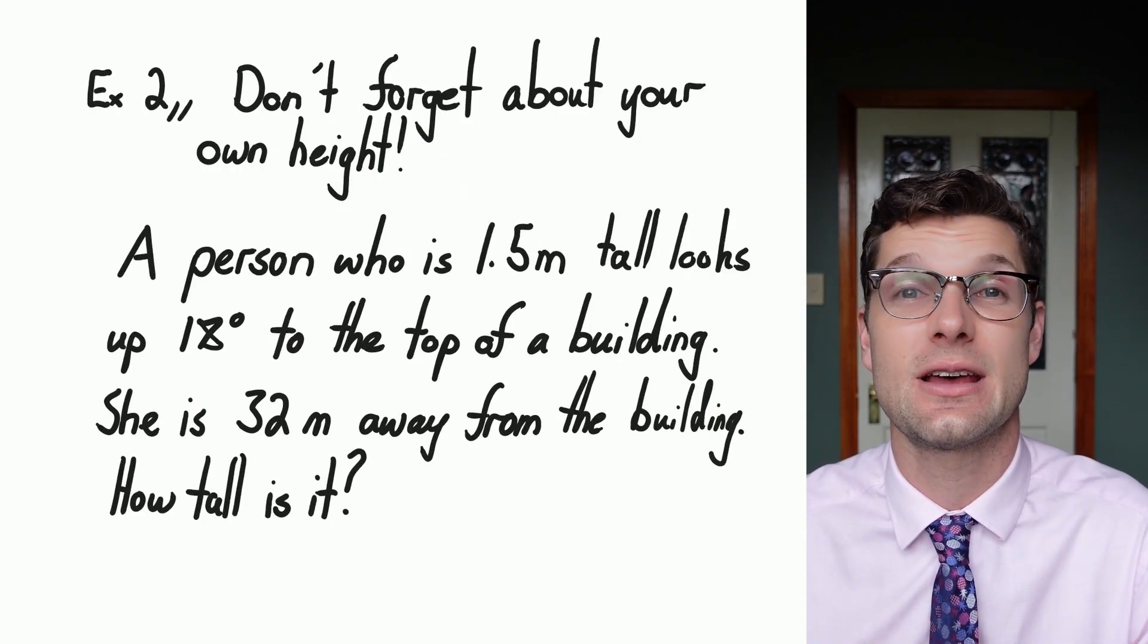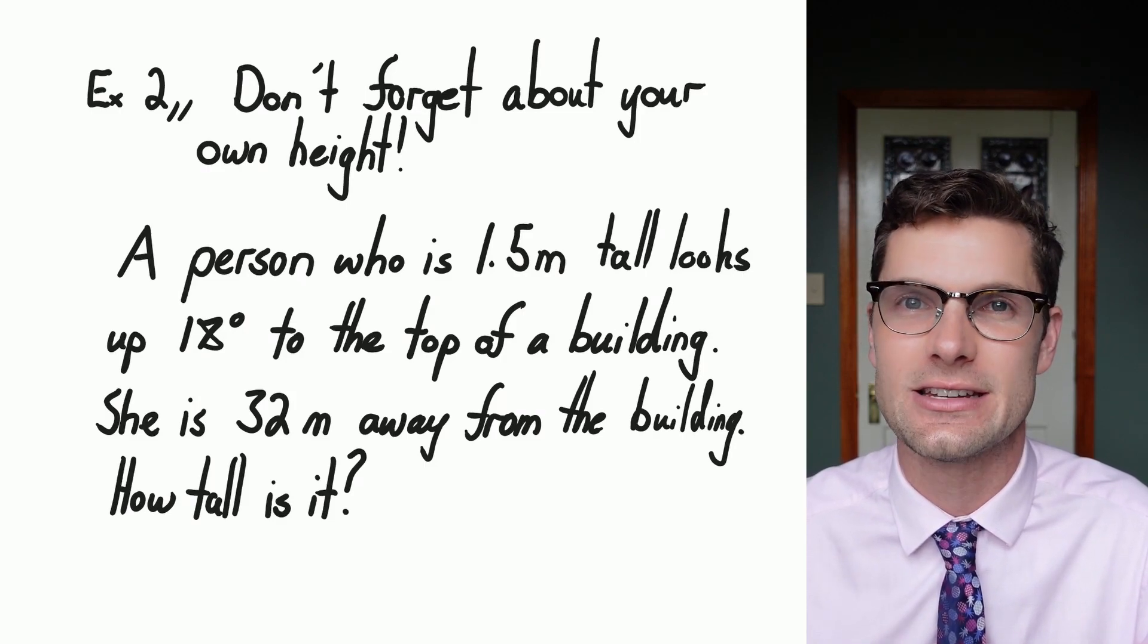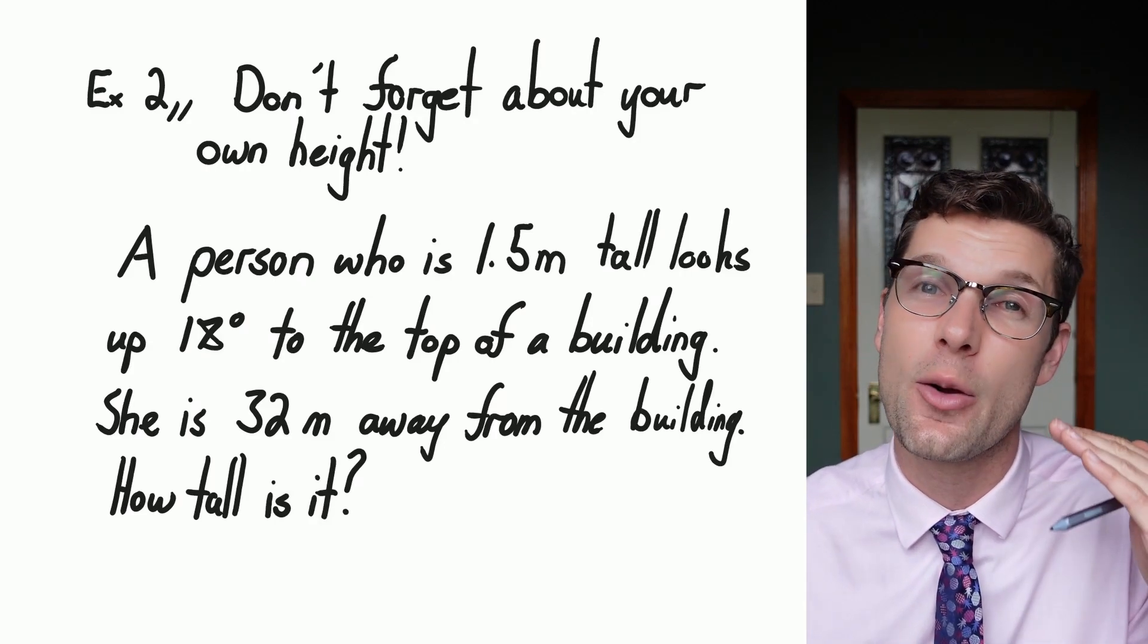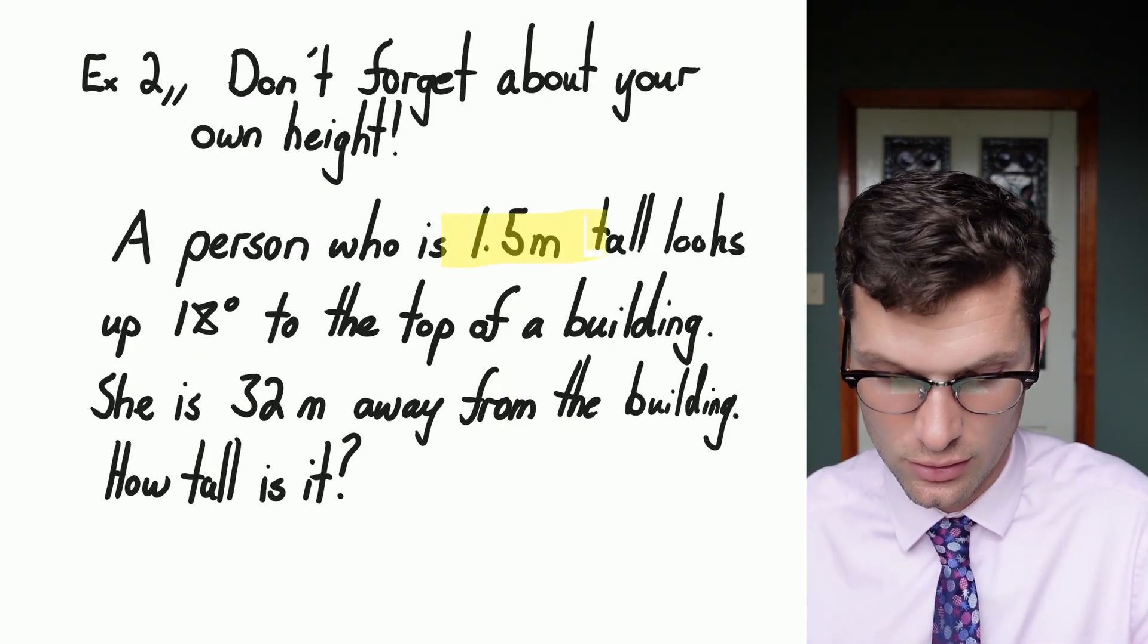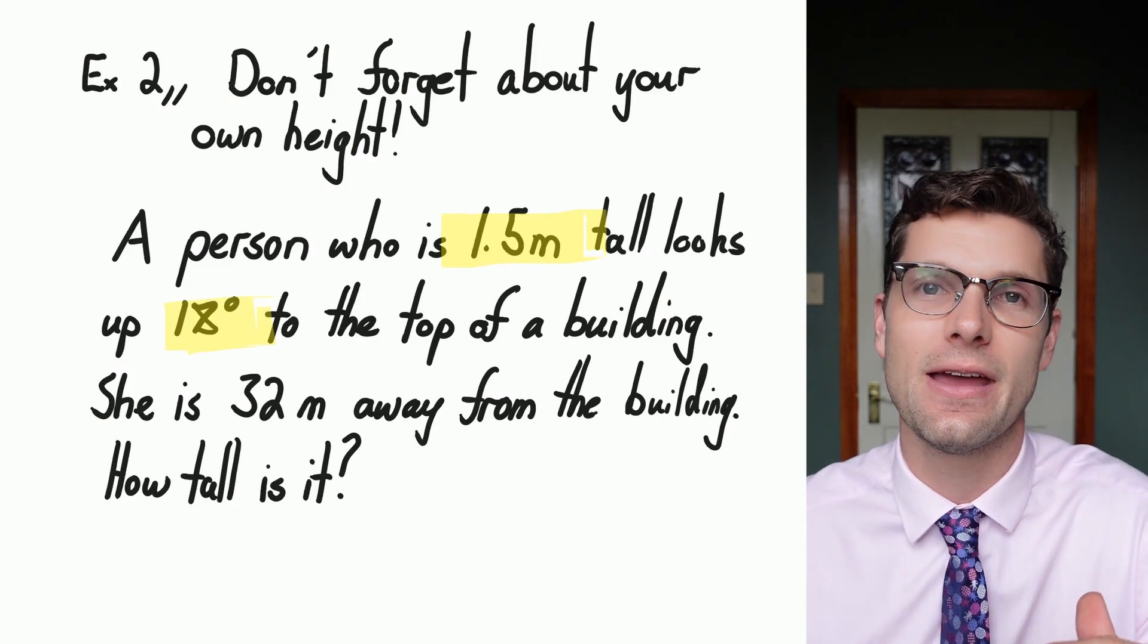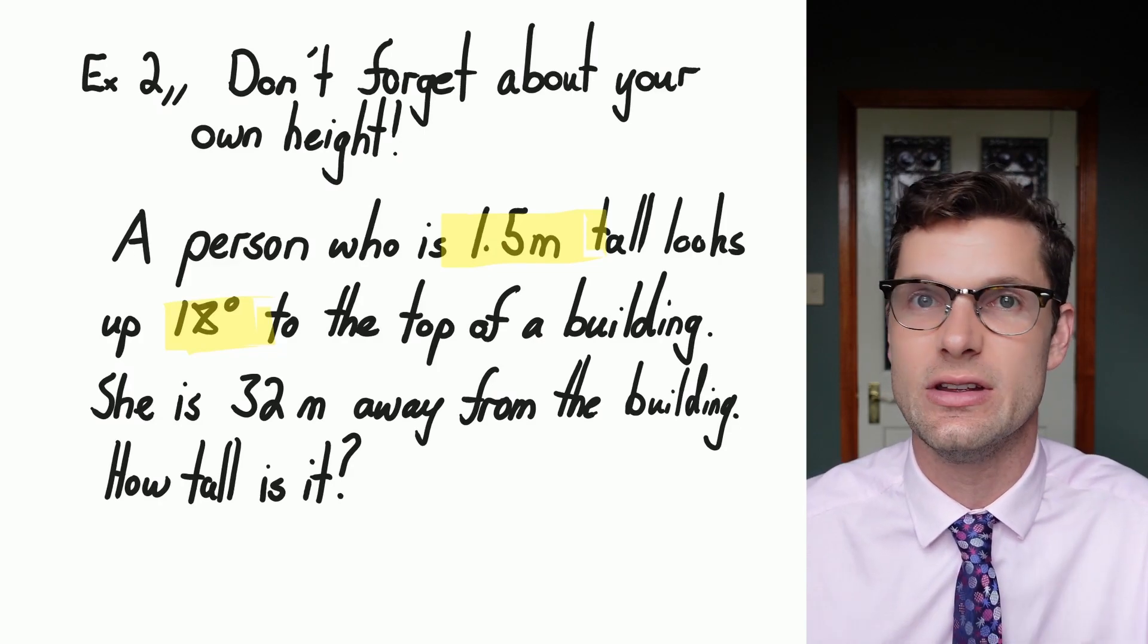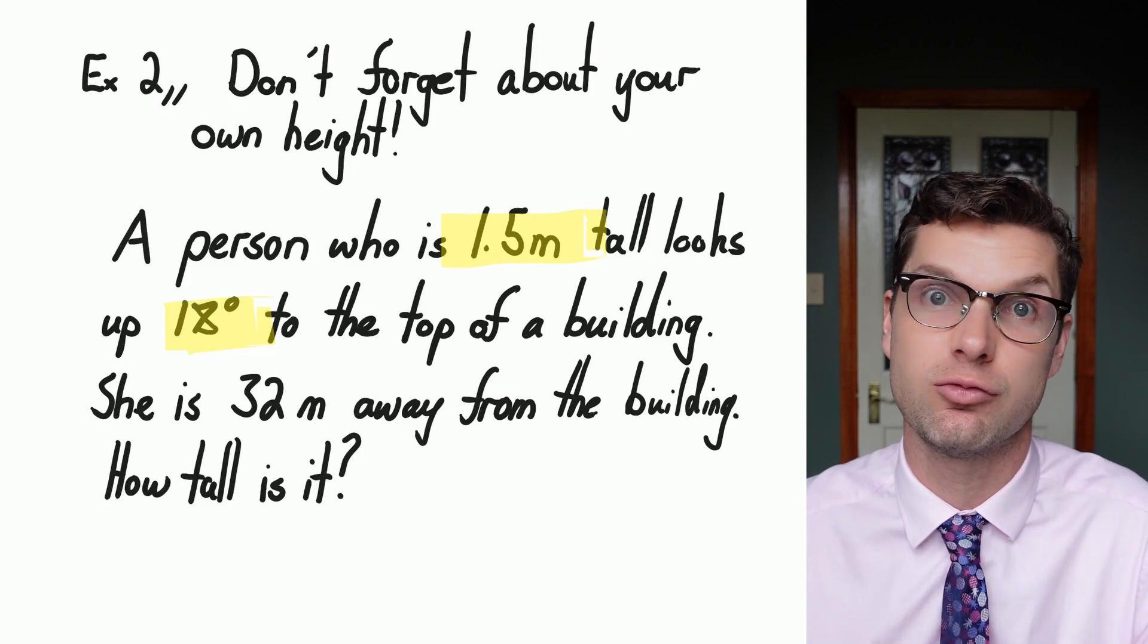In this next example, we're going to look at something that is important for these questions. You can't forget about your original height. So if you're 1.5 meters or two meters, that comes into play when trying to determine how tall something is, because we're going from your eye line, not from your feet. In this one, we've got a person that's 1.5 meters tall, and they're looking up 18 degrees. So their angle of elevation is 18 degrees, and up there is the top of the building. We know that we're 32 meters away from the building, and always assume that the road is flat. This distance is flat, so that gives us the base of this right-angled triangle.